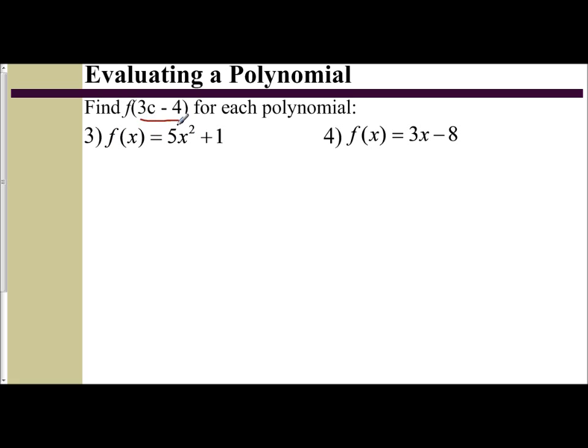This just means take this expression, F(3c - 4). This 3c - 4 is what you plug in for x, the whole expression. So if I want to find F(3c - 4), given F(x) equals 5x² plus 1, I am going to replace the x with this expression of 3c - 4. And then simplify.